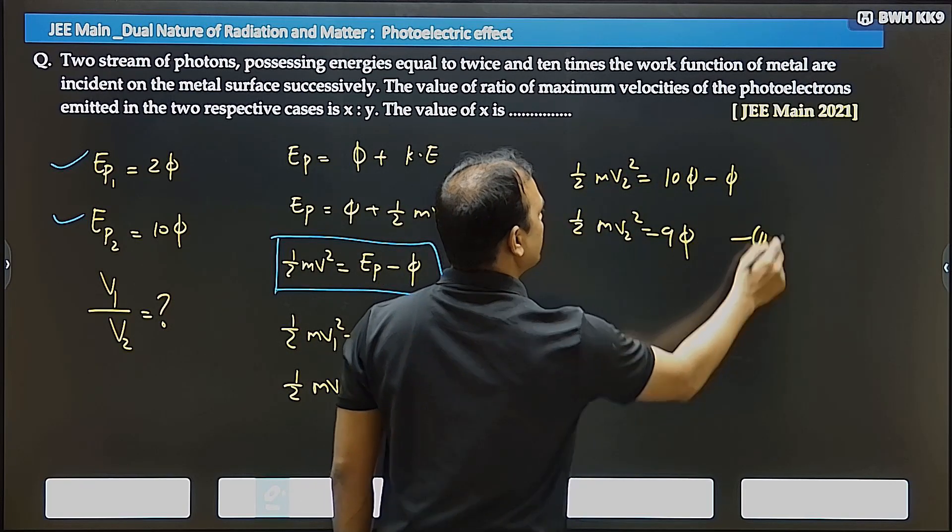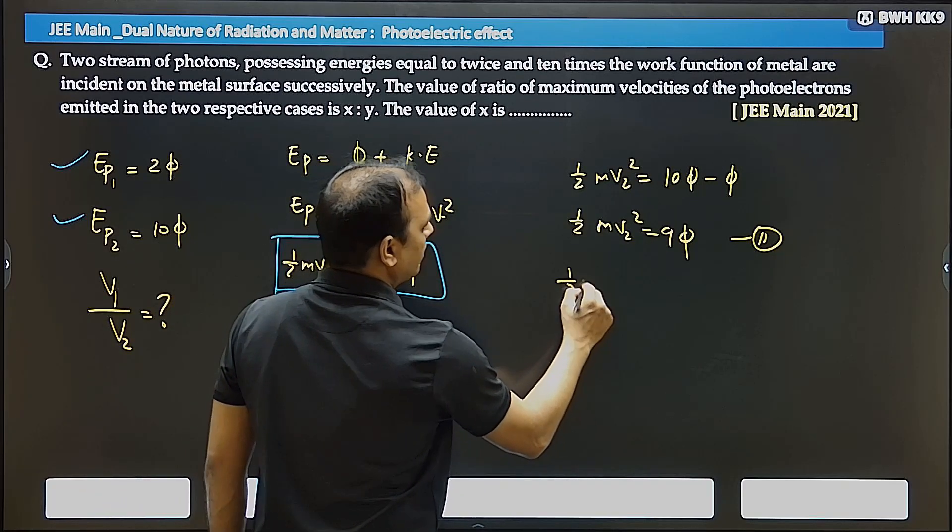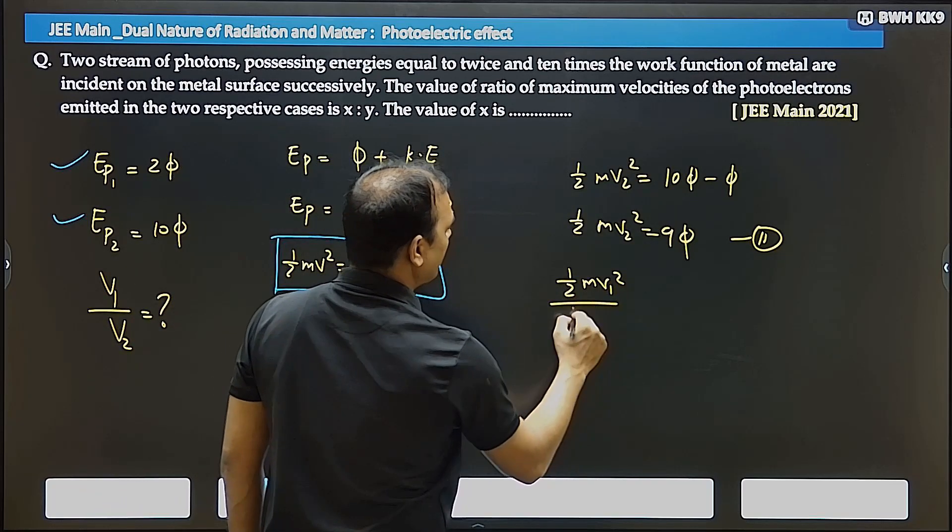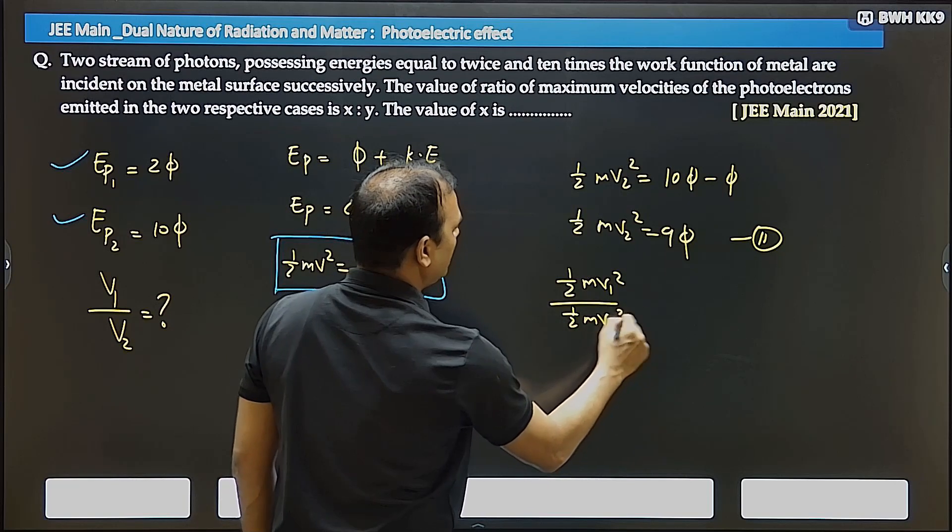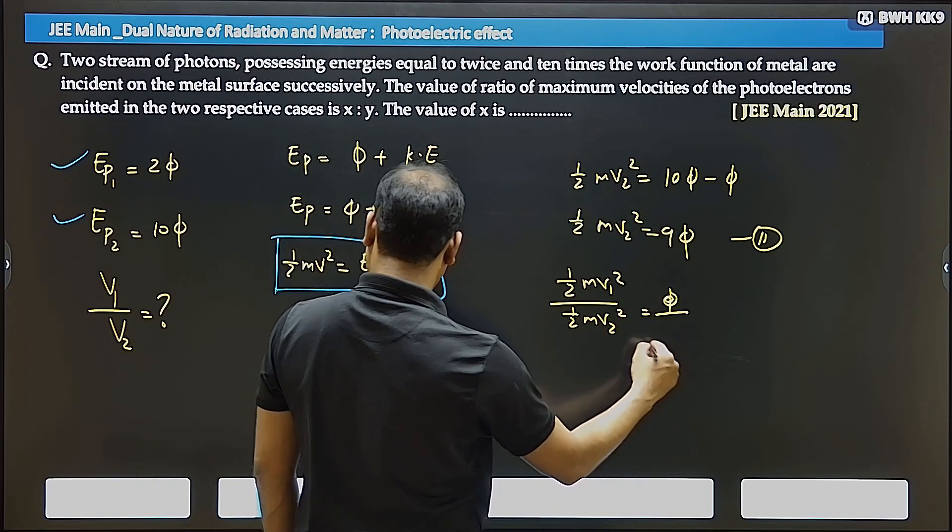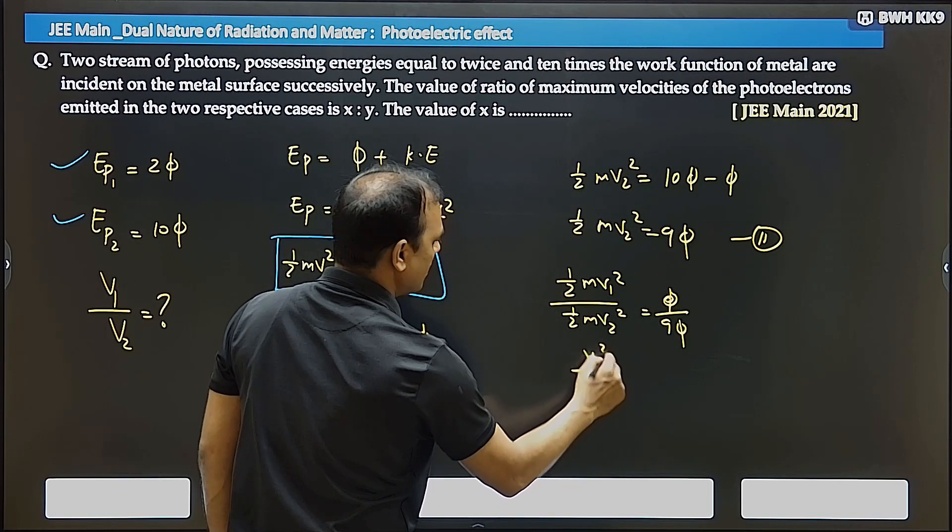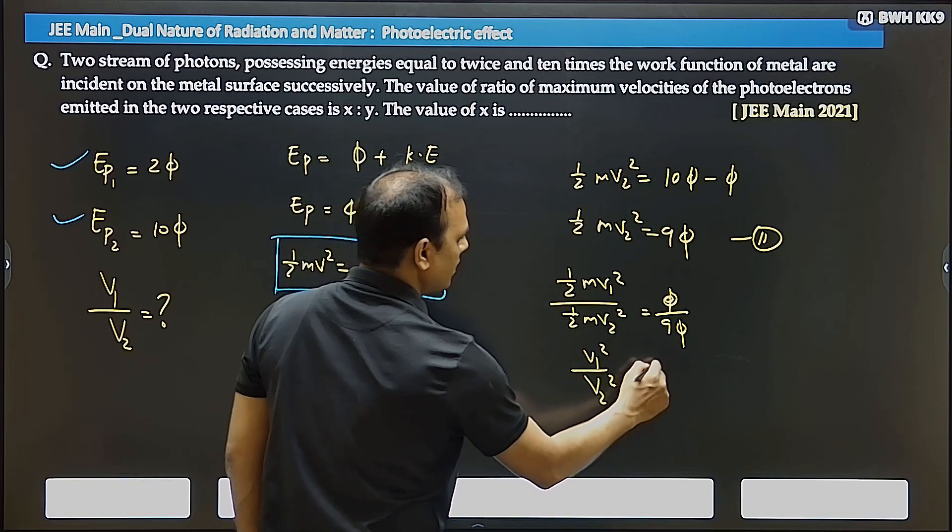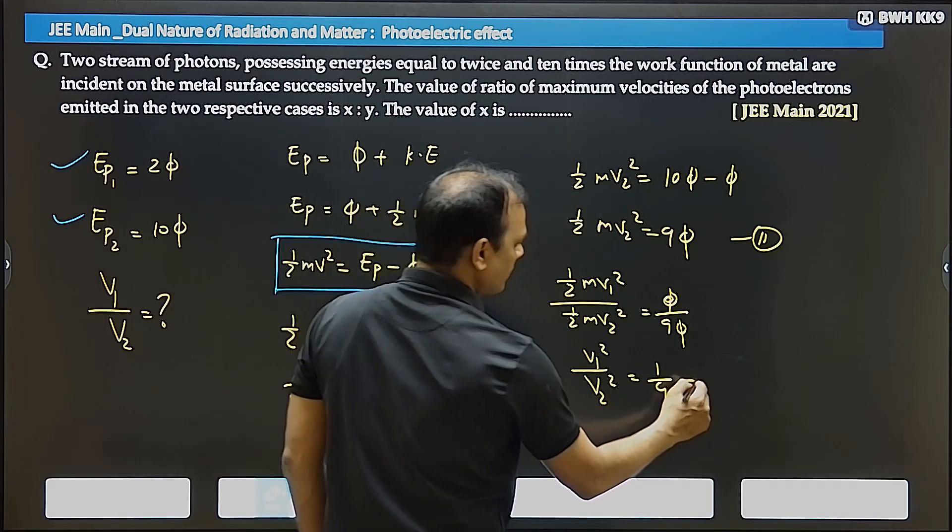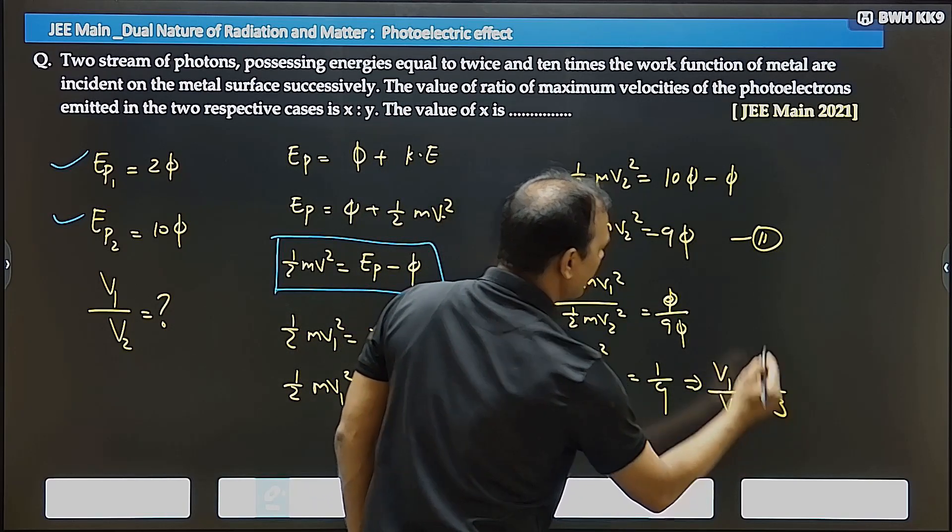So you can divide them. One-half m v1 squared divided by one-half m v2 squared equals work function divided by 9 times work function. Cancel terms: v1 squared divided by v2 squared equals 1 by 9. Therefore v1 by v2 equals 1 by 3.